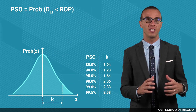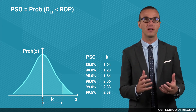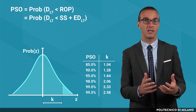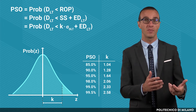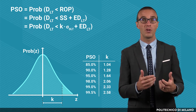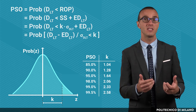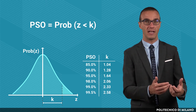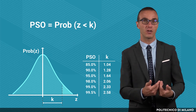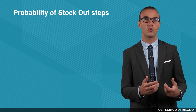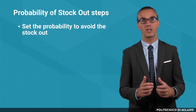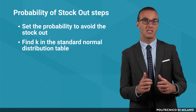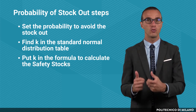The probability to avoid stockout is the probability that the real demand in the lead time is lower than the reorder point. The reorder point is the sum of the expected demand and the safety stock. Safety stocks are computed by multiplying k and the standard deviation of the demand in the lead time. After normalizing, we can say that the probability to avoid stockout is the probability that z — the standard normal distribution with average equal to zero and standard deviation of one — is lower than k. Therefore, for each value of the probability of stockout, there is a corresponding coefficient k. To determine the safety stock level when the objective service level is expressed as the probability to avoid stockout, we follow three steps: first, set the probability to avoid the stockout; second, find k in the standard normal distribution table; third, put k in the formula to compute the safety stocks.